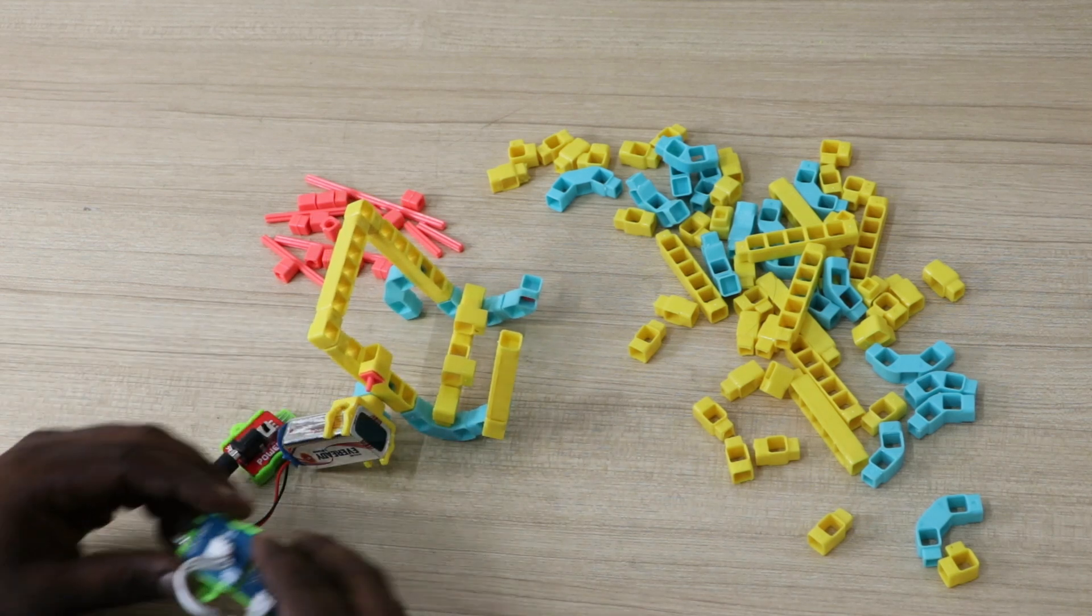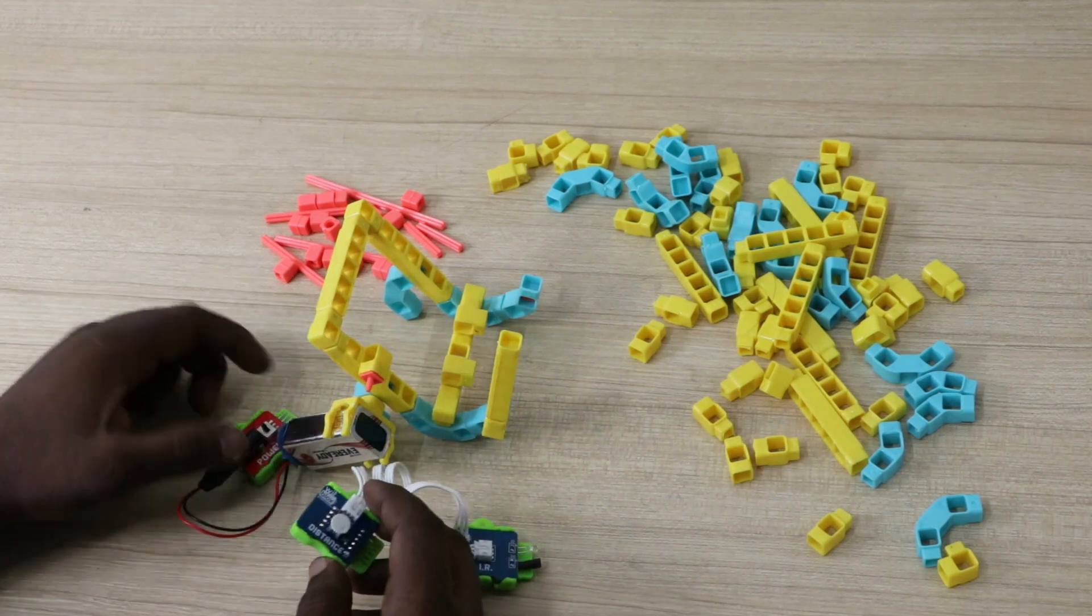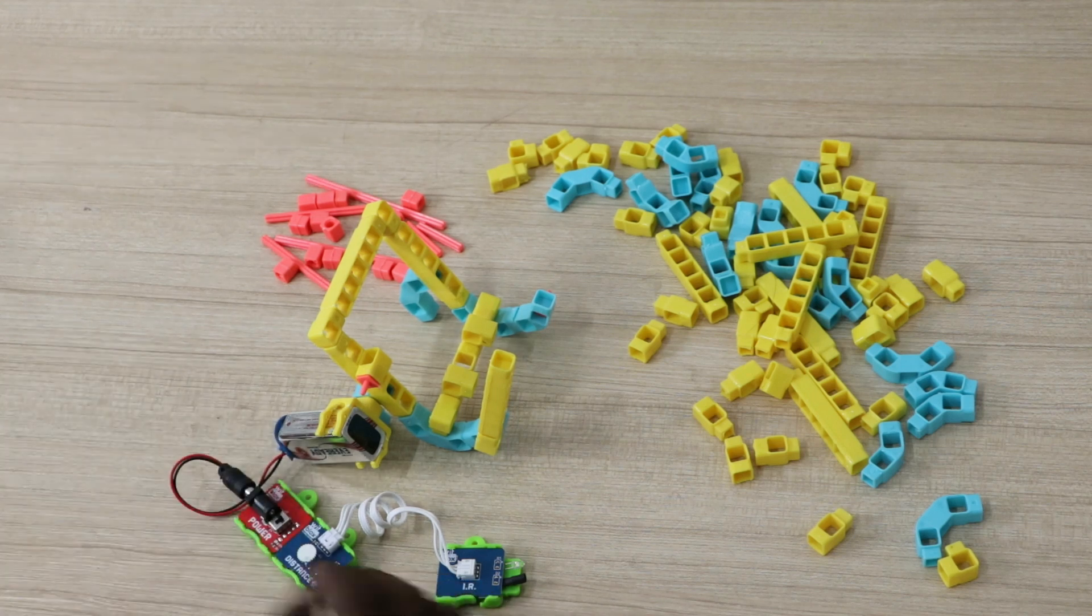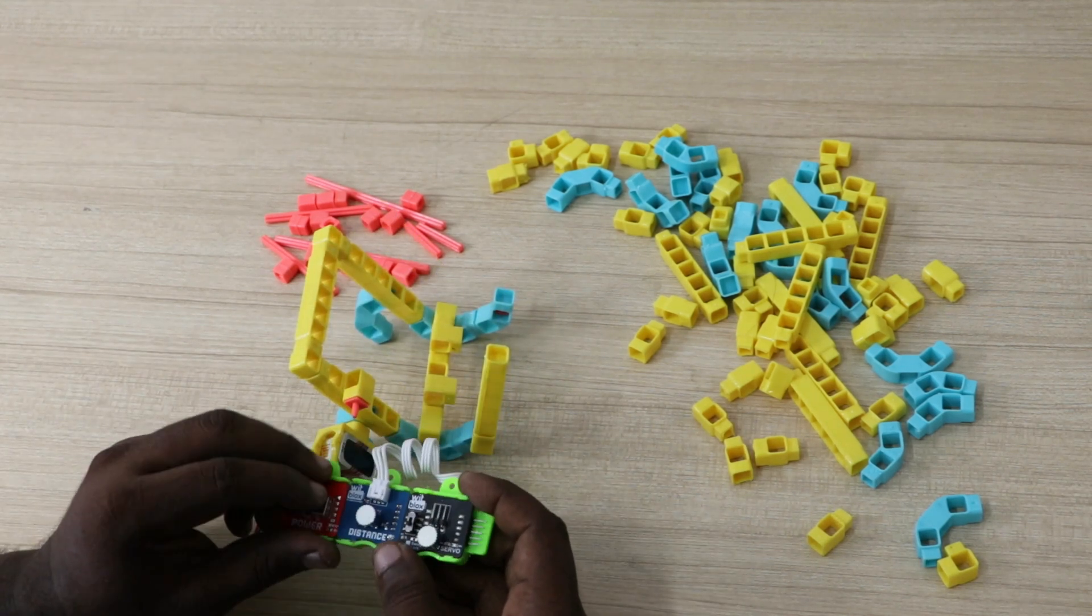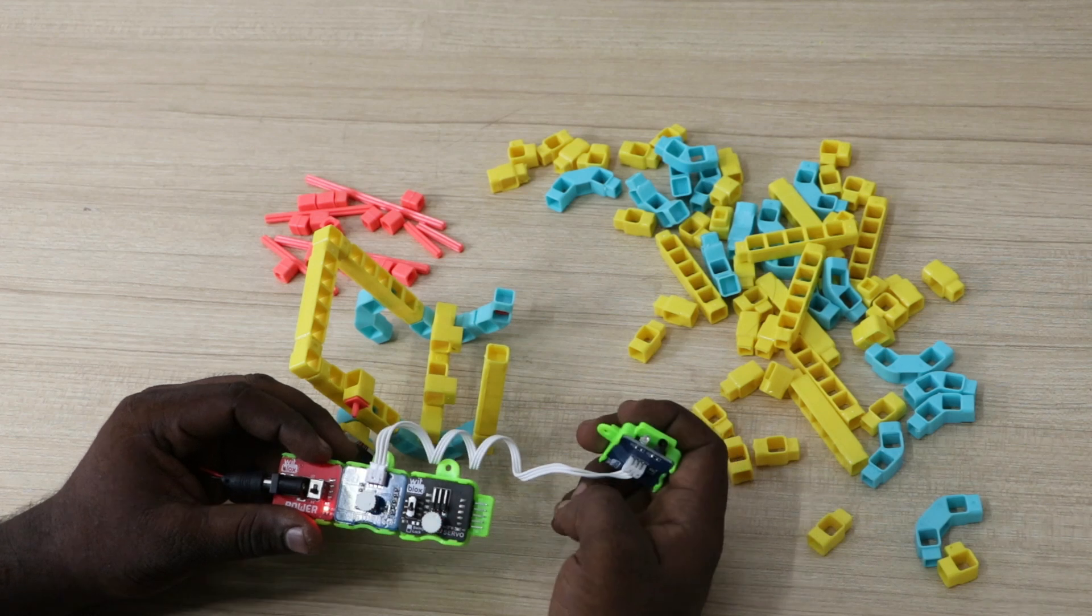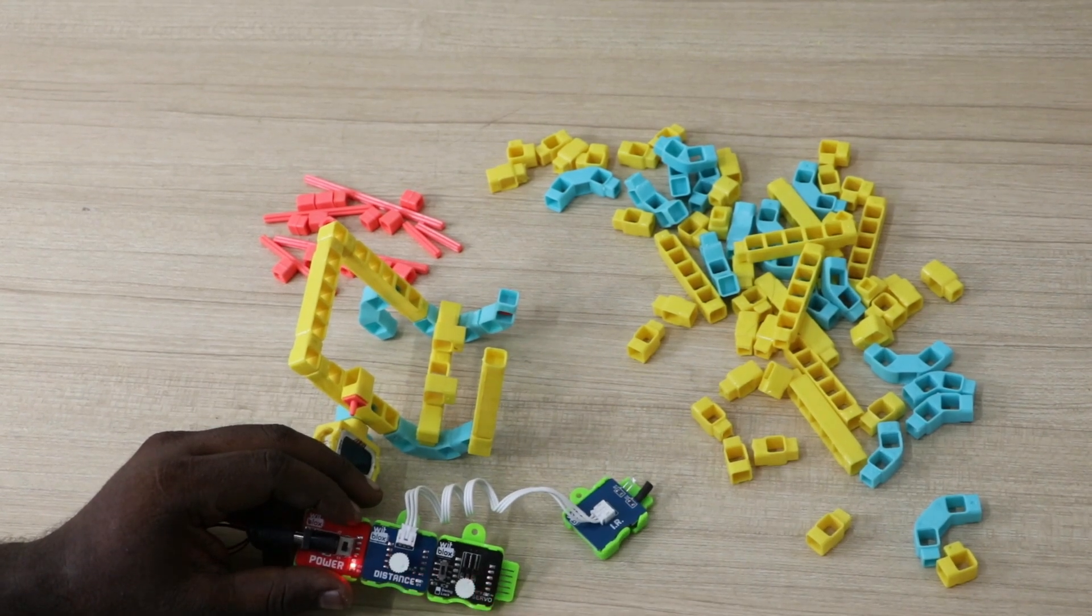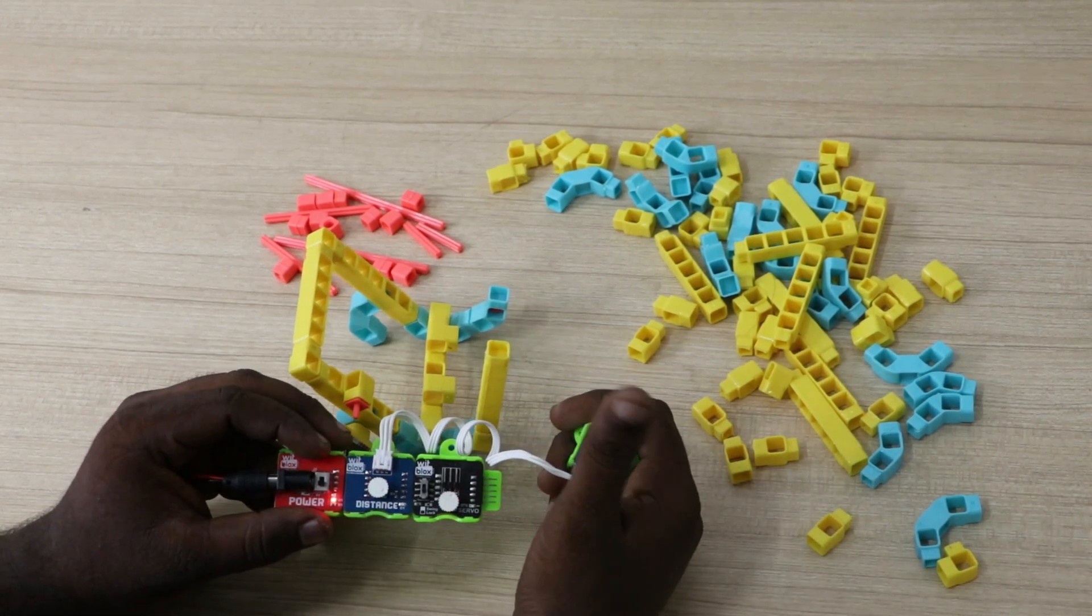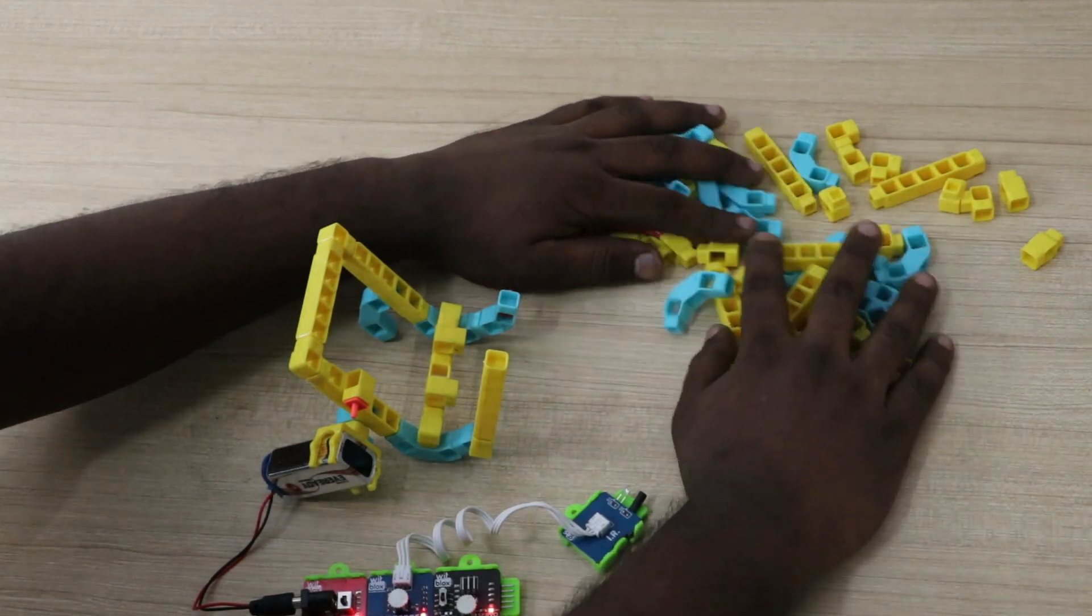Now let's create swiping logic using width blocks. Take a distance and IR sensor and attach it to power blocks. Then attach a servo blocks. This will create a swing mechanism when we place our hand. Clear all the remaining width bricks.